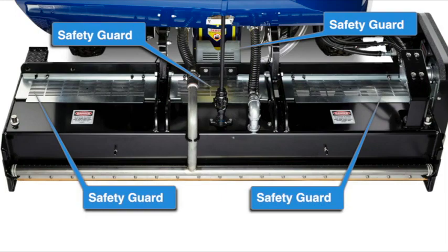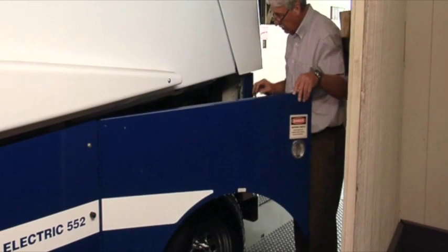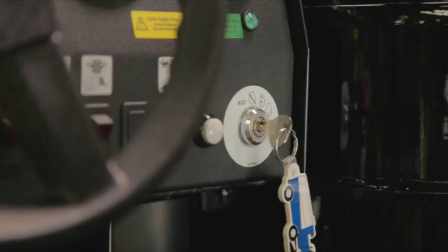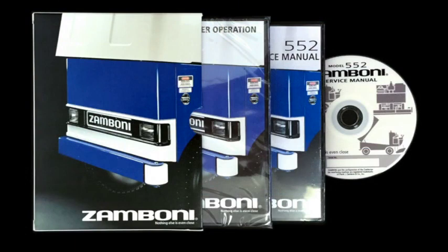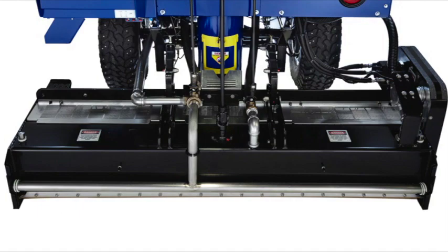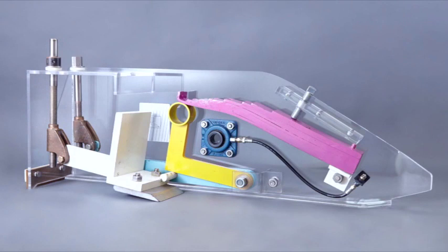It is critical that anyone working on the resurfacer exercise caution at all times. Never perform any maintenance or service on the machine without first turning the machine off and removing the key. Be sure that the conditioner is properly supported before working on or reaching underneath it. In addition, everyone should familiarize themselves with the part of the resurfacer they intend to service prior to doing the work. During this presentation, we will review the conditioner's parts and their respective functions, as well as the systems and parts which interact closely with or within the conditioner.